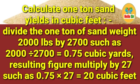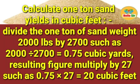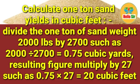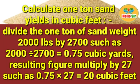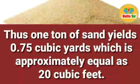Dividing 2000 by 2700 gives 0.75 cubic yards. Then multiply the resulting figure by 27: 0.75 multiplied by 27 equals 20 cubic feet.